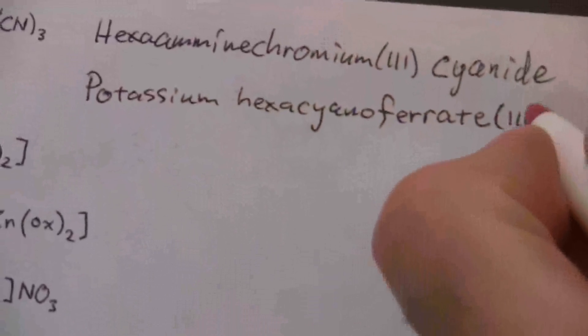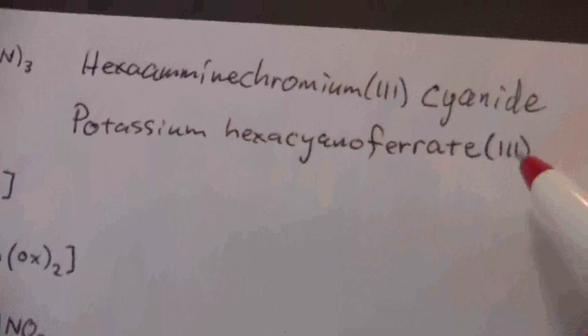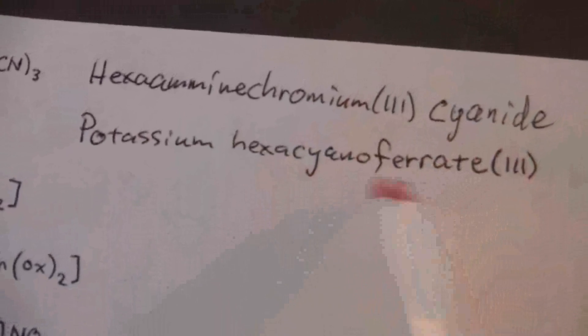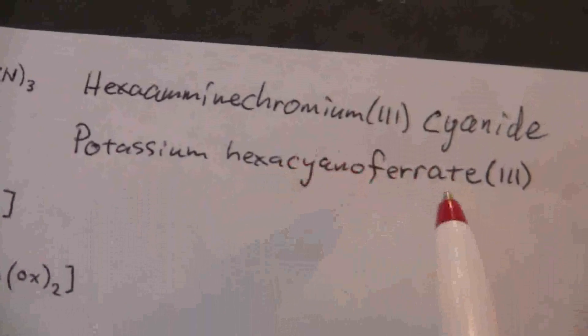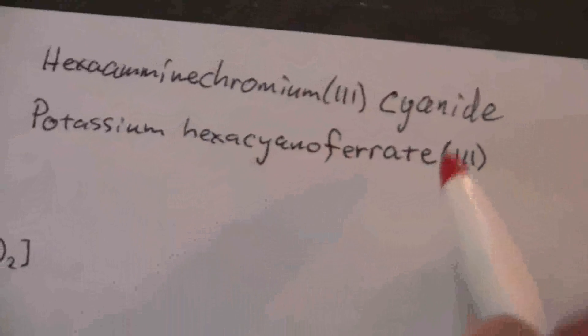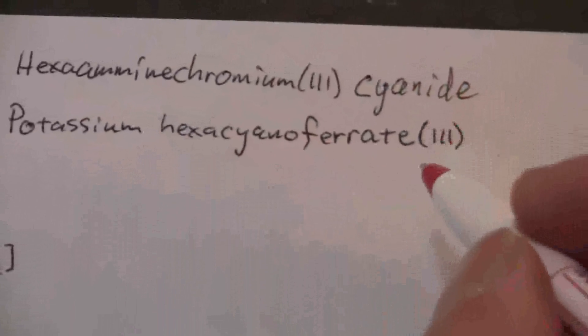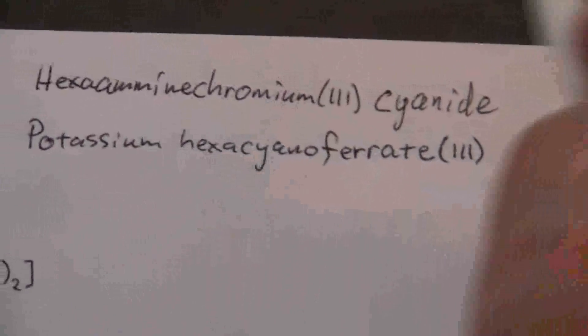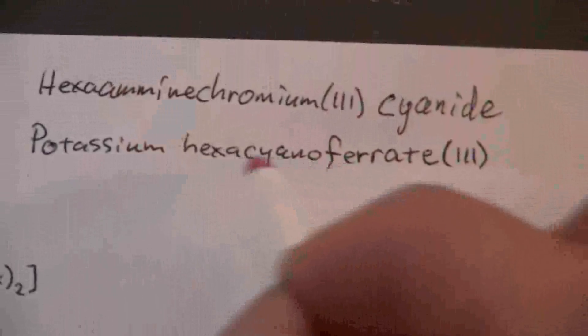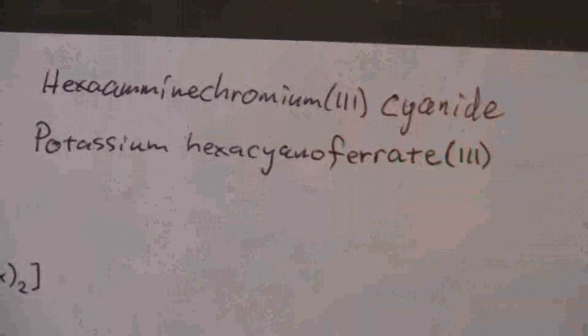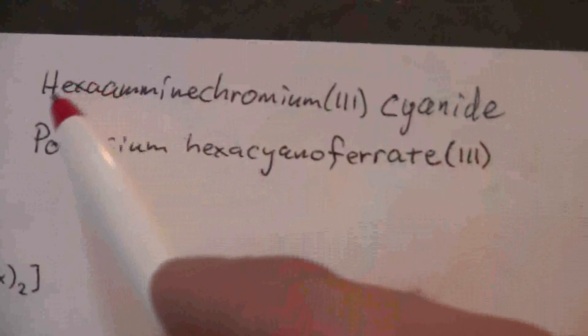Okay, so hexacyanoferrate and then we put in Roman numerals the charge for the iron. So when the complex ion is the anion, we change the metal ending to ATE. That's kind of like a period at the end of our sentence, just like the IDE is a period at the end of the sentence, whereas when we have it in the middle we put an O indicating there's more to come. Okay, so potassium hexacyanoferrate(III).